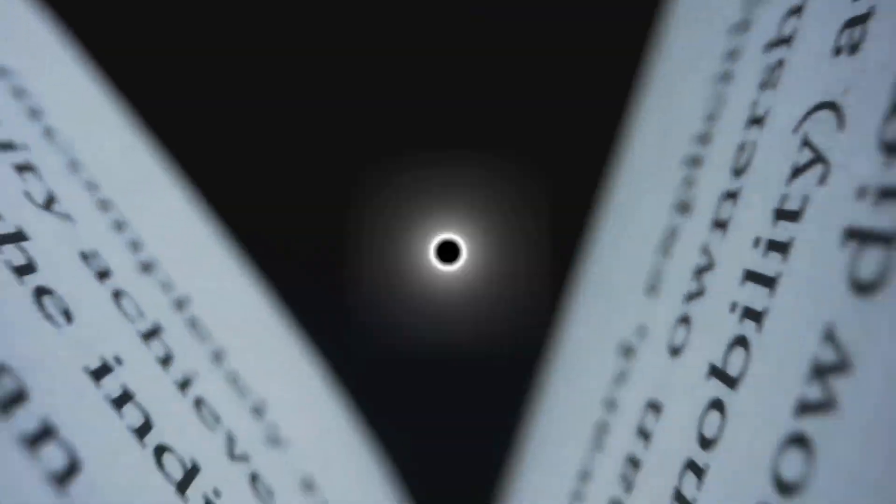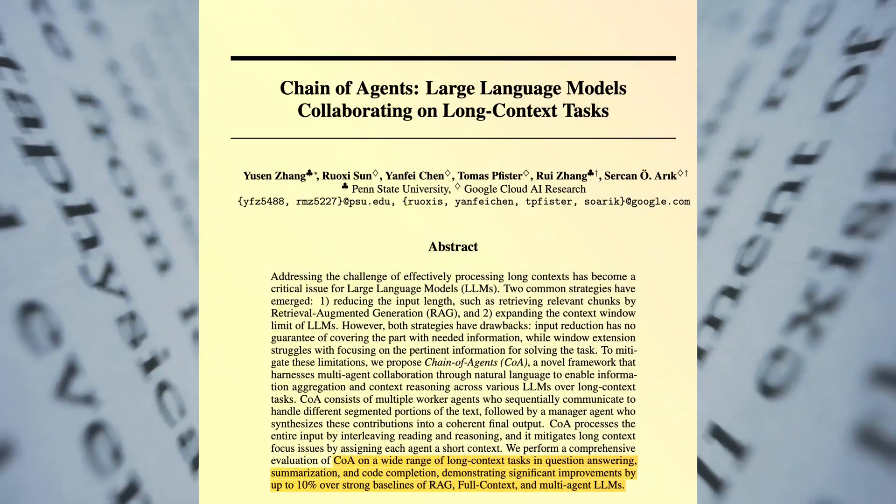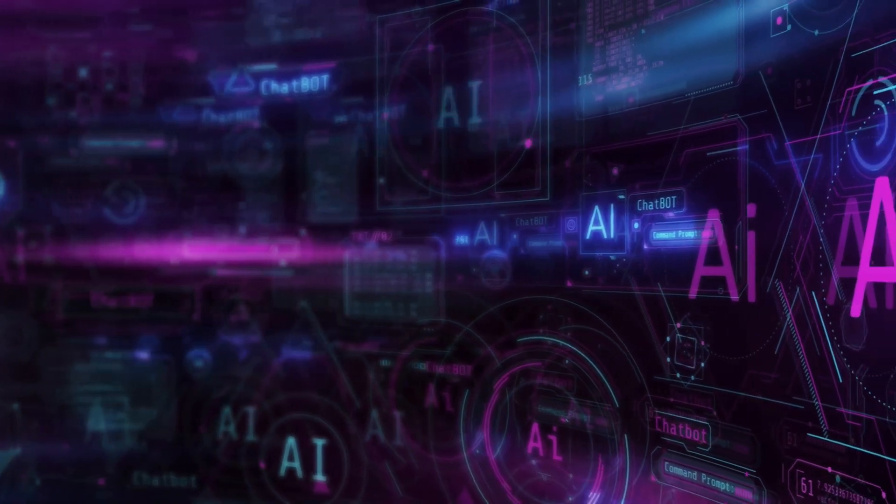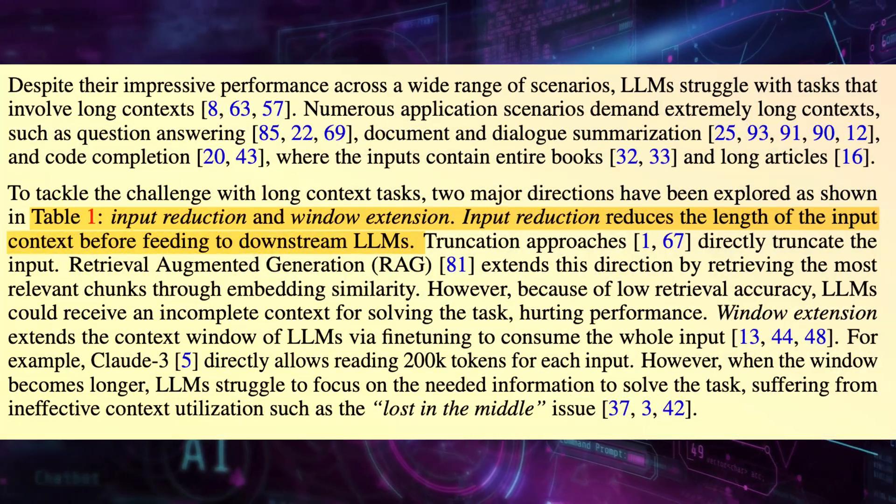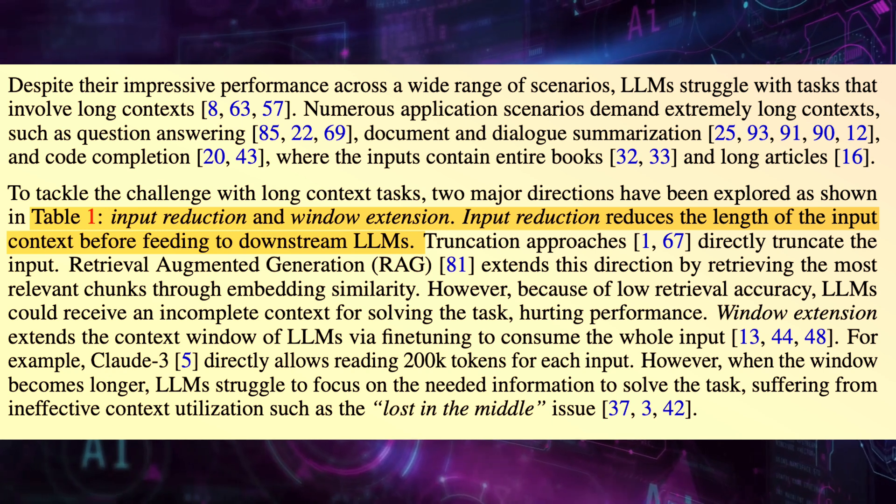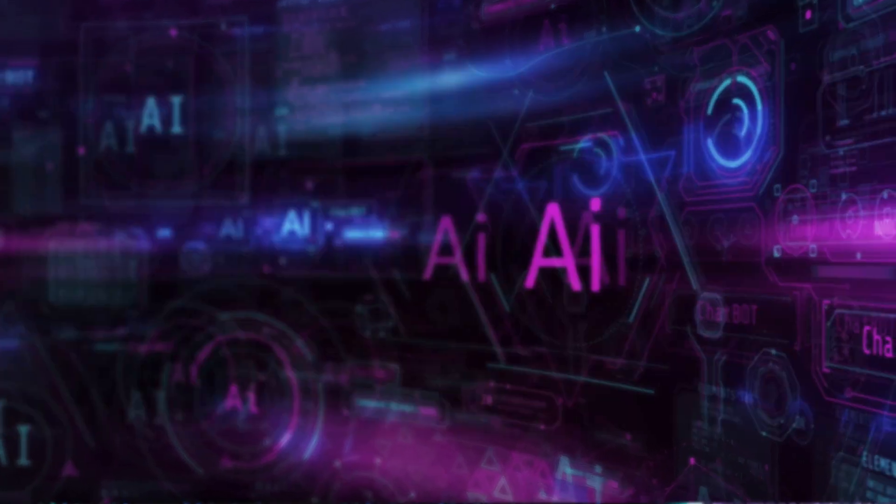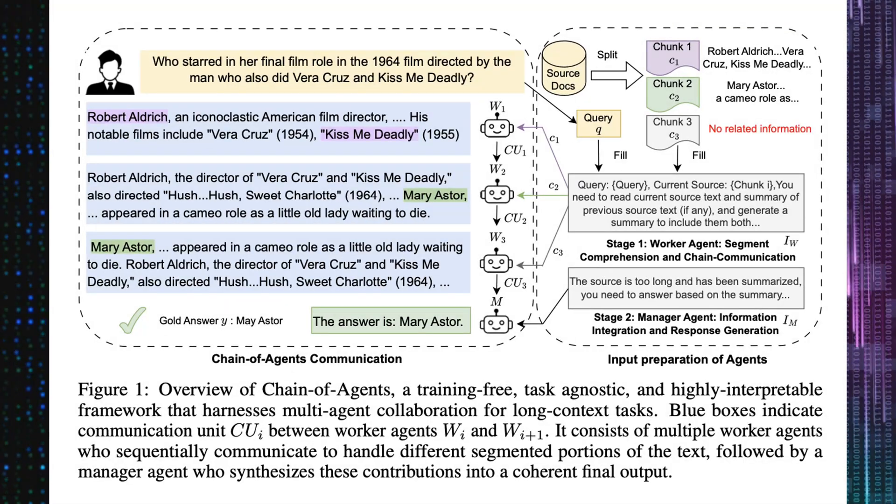This paper addresses the challenge of processing long contexts in large language models, LLMs. There are two existing strategies, input reduction and context window extension, that struggle with trade-offs between completeness and focus. To overcome these limitations, the authors propose the chain of agents framework.